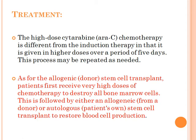For donor stem cell transplant, the patient first receives very high doses of chemotherapy to destroy all bone marrow cells. This is followed by either a donor or the patient's own stem cell transplant to restore blood cell production.